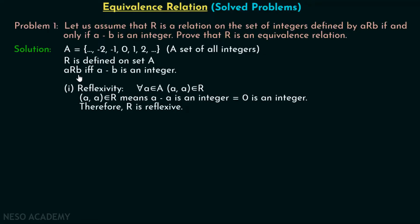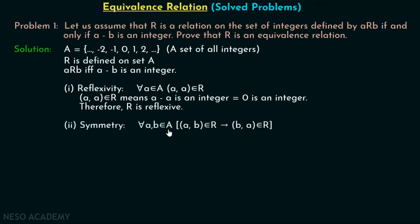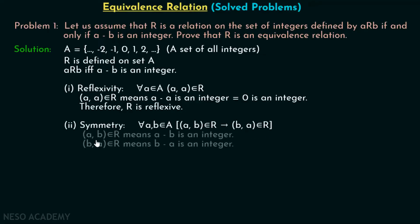Now let's identify whether this relation is symmetric or not. We know the definition of symmetry: for all A, B belonging to set A, if the ordered pair (A, B) belongs to R, then (B, A) must also belong to R. What is the meaning of (A, B) belonging to R? It means A minus B is an integer.